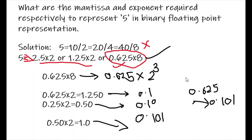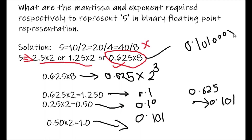Now you have converted 0.101. Binary floating point representation can be in octal or hexadecimal. In octal, each digit is represented in 3 bits. So 0.625 can be represented as 0.101, and add 3 zeros to make it 6 bits: 0.101000, multiplied with 2 to the power 3.